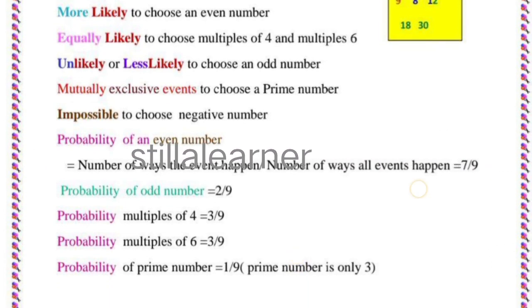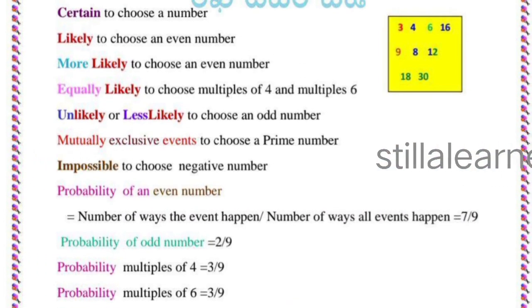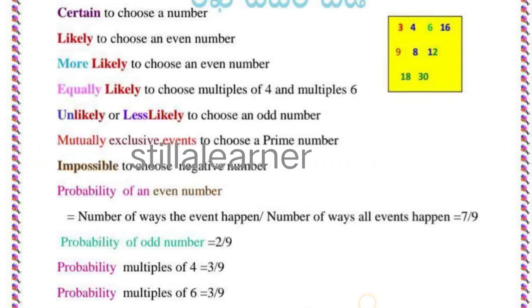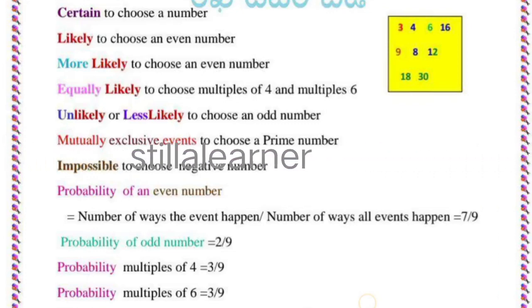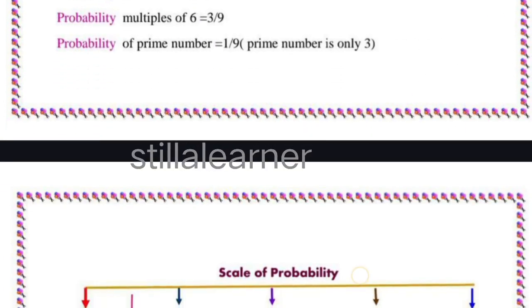Then probability of prime number: the only prime number here is 3, that's why 1/9.